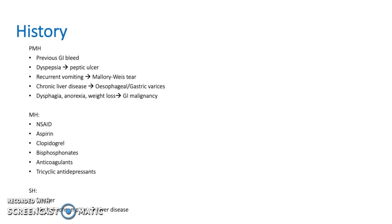For the medication history, ask specifically about NSAIDs, aspirin, clopidogrel, bisphosphonates, anticoagulants, and tricyclic antidepressants. For social history, ask if they are a smoker or about their alcohol consumption, as alcohol can indicate liver disease.